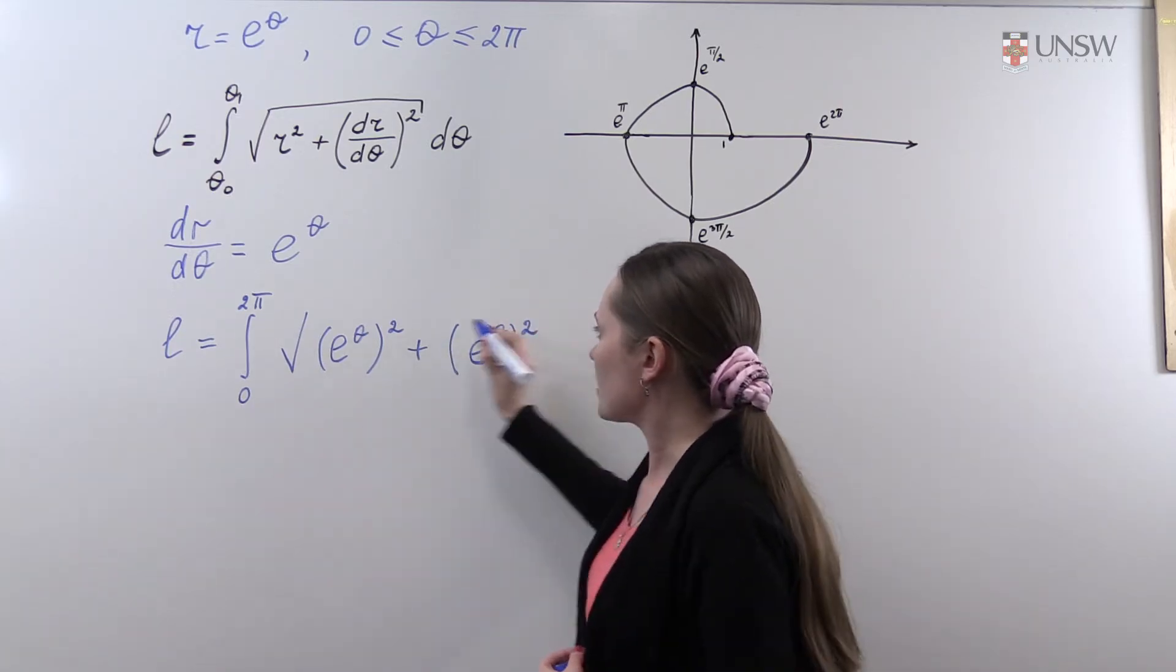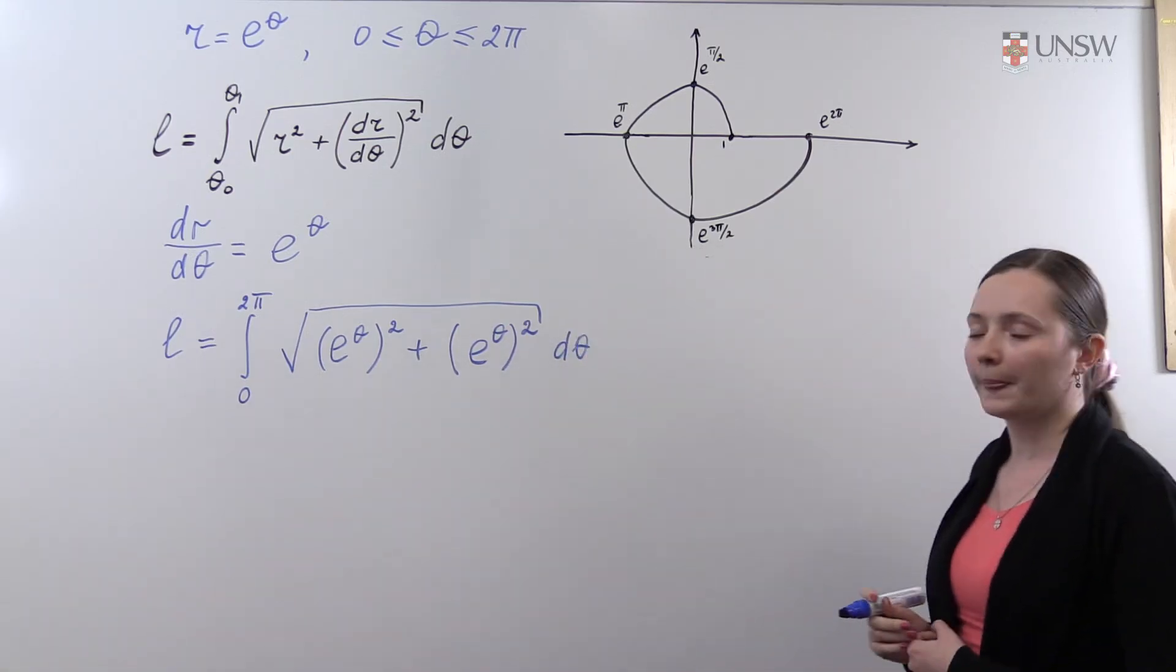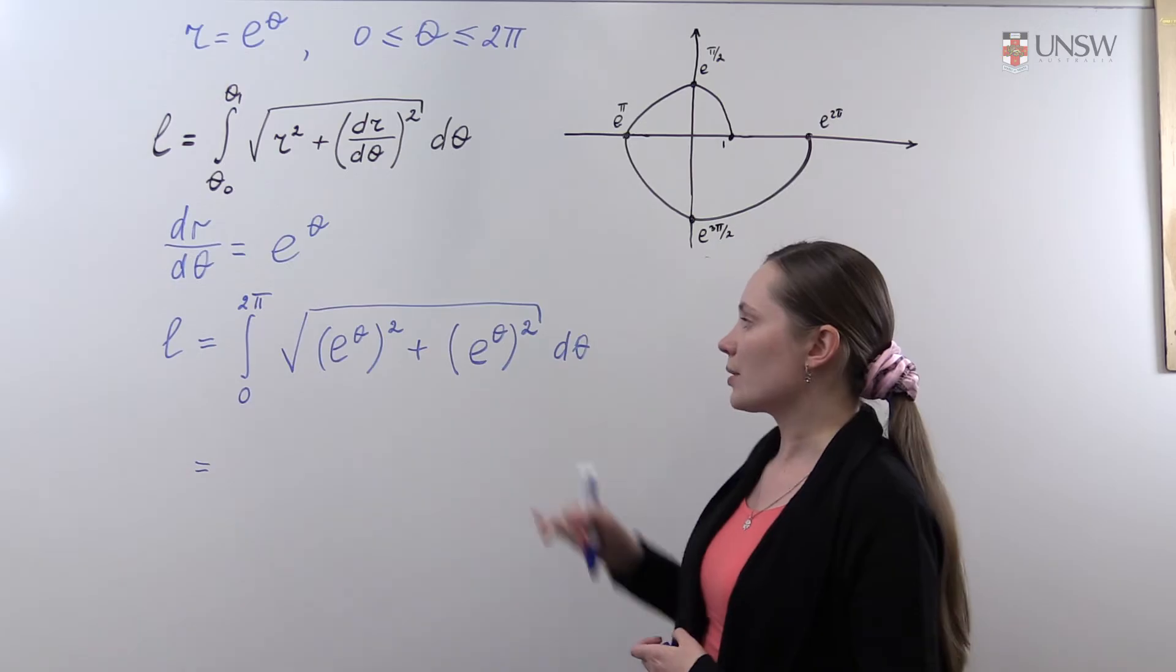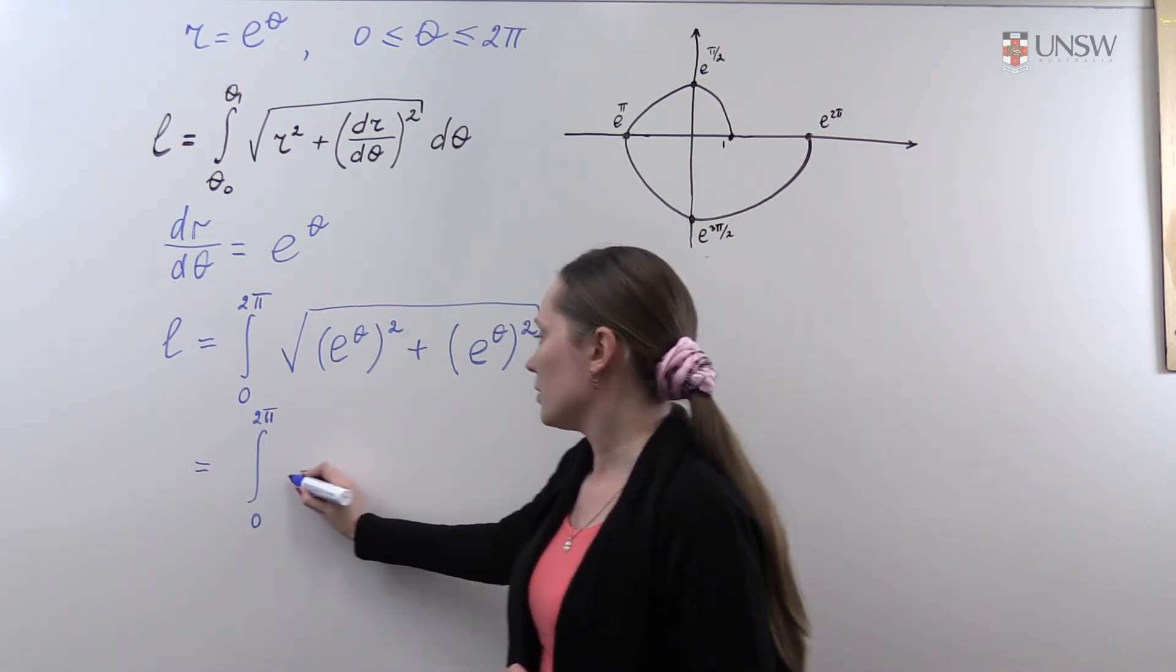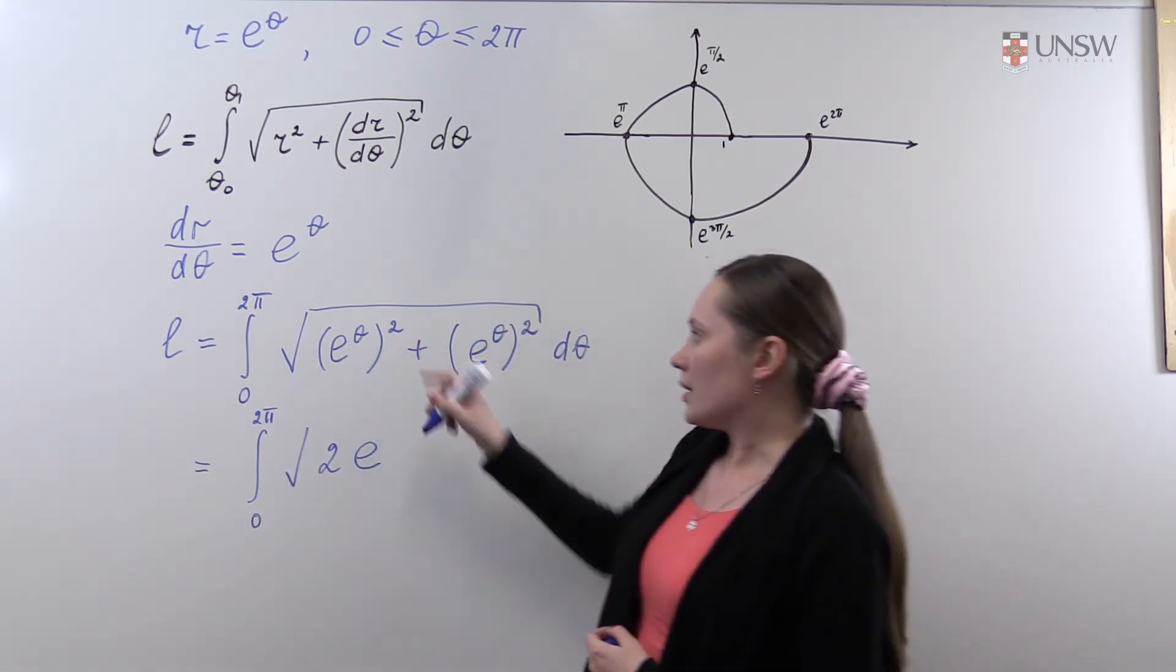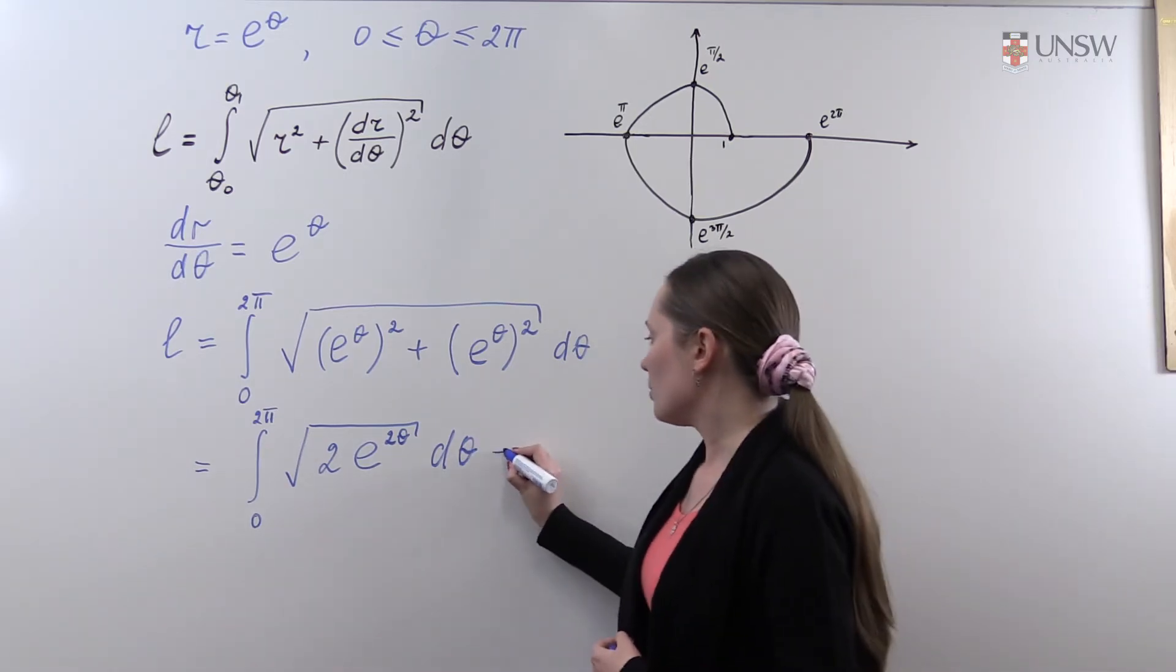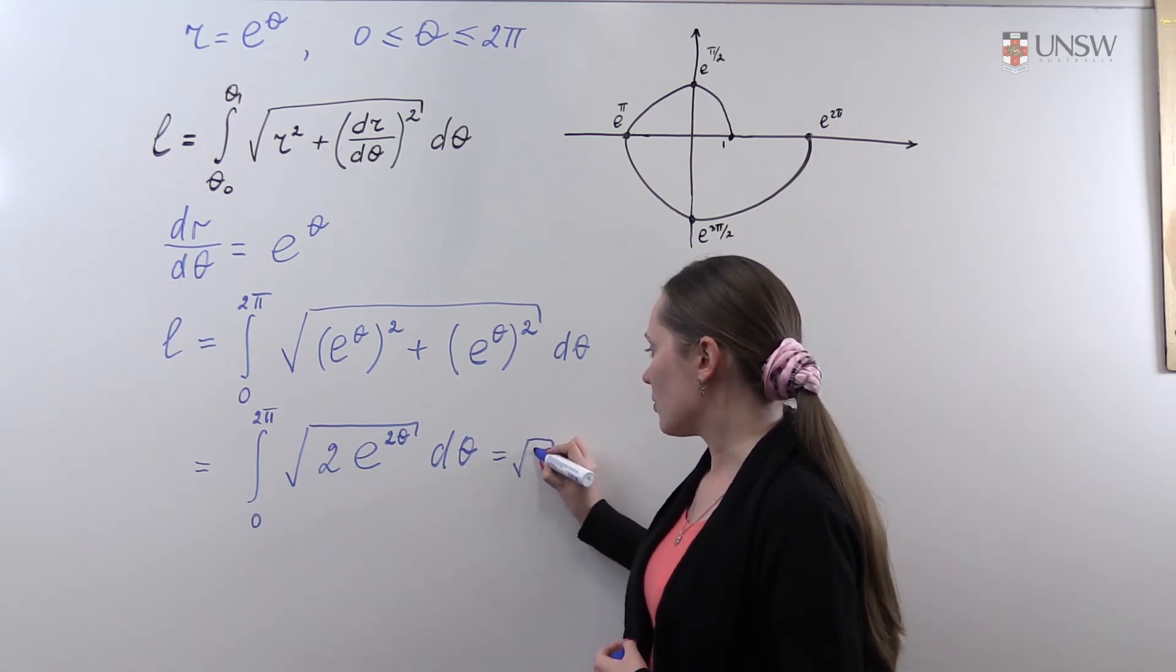Let's find the integral. First of all, you see that under the square root we have the sum of the same terms, so it will be 2e to the theta squared, which is e to the 2θ. So splitting this root, we may take the constant square root of 2 out of the integral.